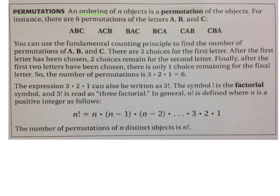For example, there are 6 permutations of the letters A, B, and C. We could write A, B, C, A, C, B, B, A, C, B, C, A, C, A, B, or C, B, A. Those are 6 different ways to write the same combinations, but in different orders. So you can use the fundamental counting principle to find the number of permutations. You have 3 choices for the first letter, then 2 choices for the second, and then 1 choice for the third. So you do 3 times 2 times 1, and you would get 6.